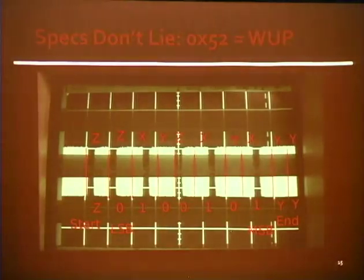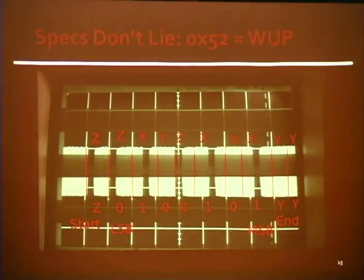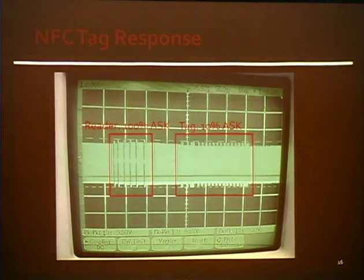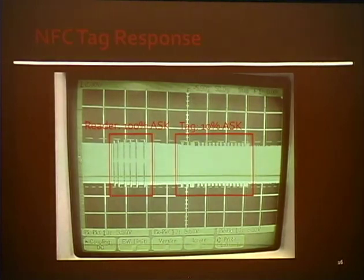We were curious about the spec, so we took out our oscilloscope and sniffed a reader waking up a tag. You can see the carrier wave there at 13.56 going really fast — much faster than the 100% amplitude shift keying. It's broken down into three symbols: X, Y, and Z. At the end there are some extra Y symbols, which is unmodulated energy to keep power to the tag, because the tag doesn't have power of its own and has to modulate that energy to respond to the reader's request. On the right is the tag at 10% amplitude shift keying — it looks like a saw again. This is basically just a wake-up and anti-collision sequence.